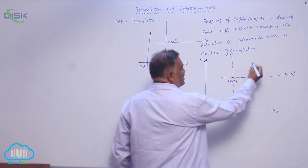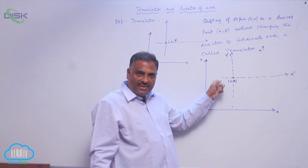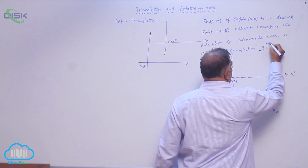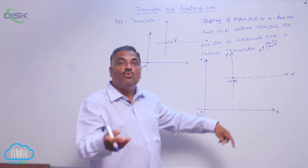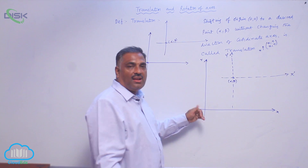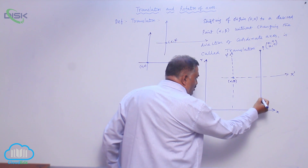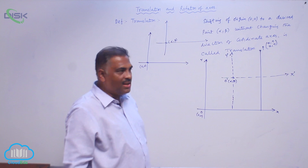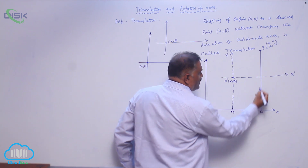Now you can see very clearly — let us consider a point P. Before shifting, the point is in the previous system; after shifting, the point is in the new system. Let us write: small (x, y) denotes the coordinates of point P in the old axes, and capital (X, Y) is the coordinates of point P after the origin is shifted to (α, β). Let us draw perpendiculars onto the axis and label distances: this is M, this is N, this is Q, and this is O-dash.